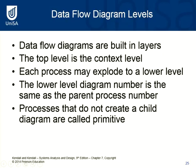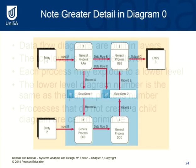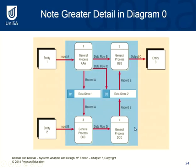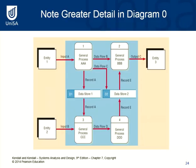We create data flow diagrams at levels, starting at the context diagram, then diagram zero, and then each of those processes can be exploded to another level. If you explode process one, the sub-processes would be numbered 1.1, 1.2, 1.3, 1.4. If you explode process four, they would be 4.1, 4.2, etc. The numbering convention plays an important part in how you level these diagrams — it shows which processes are being exploded at a finer level of detail. Not every process needs to be exploded; only do so if required.